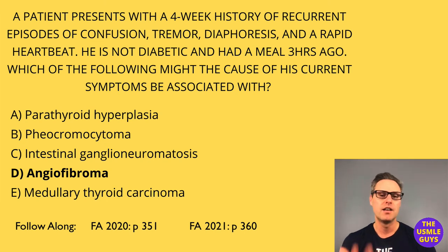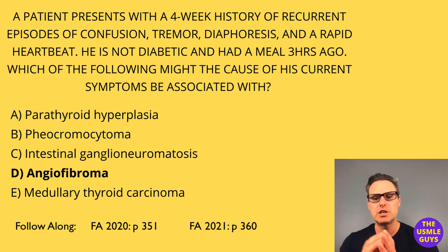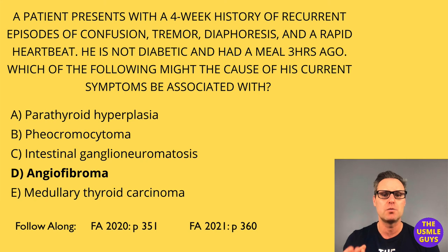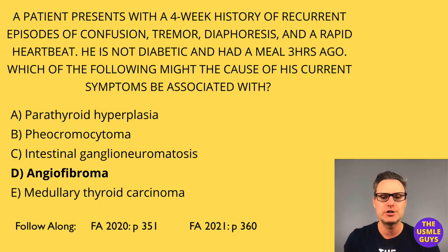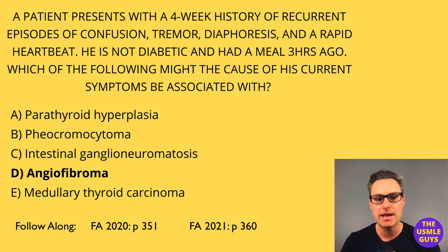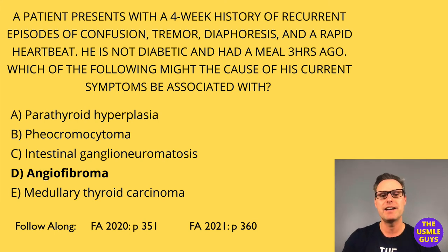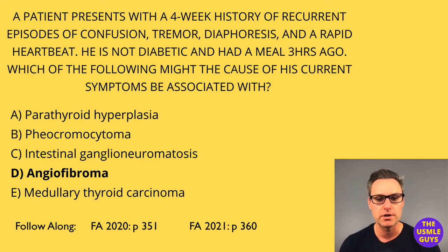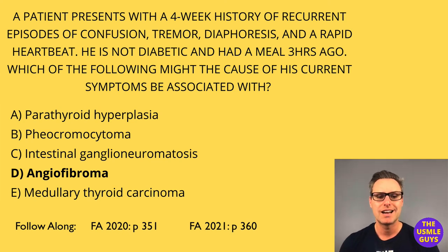Additional associations with MEN1 include meningiomas, angiofibromas, and collagenomas. In a vignette, a patient might have one of these lesions and you'd be asked what else to expect — one of the main MEN1 findings like a tumor of the pancreas, parathyroid, or pituitary, or associated findings like angiofibromas, meningiomas, and collagenomas.